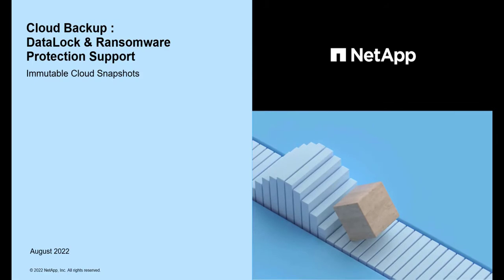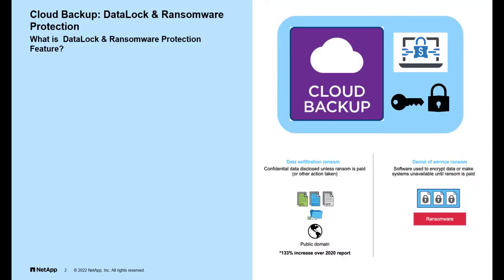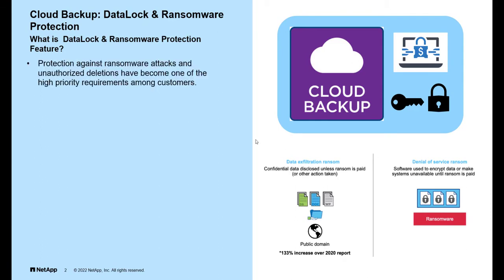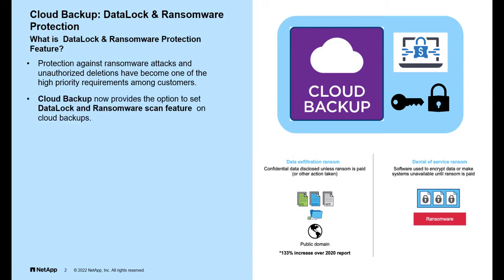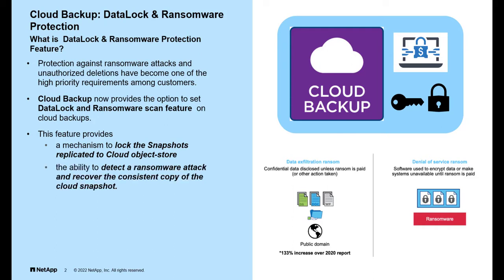Welcome to this video where we will examine how cloud backup data lock and ransomware protection works. Data lock and ransomware protection is a feature that protects against ransomware attacks and unauthorized deletions — one of the highest priority requirements among customers. Cloud backup now provides the option to set data lock and ransomware scan on cloud backups. This feature provides a mechanism to lock snapshots replicated to the cloud object store, detect ransomware attacks, and recover a consistent copy of the cloud snapshot. The solution uses both SnapMirror to Cloud and Active Data Connector technology to achieve this functionality.